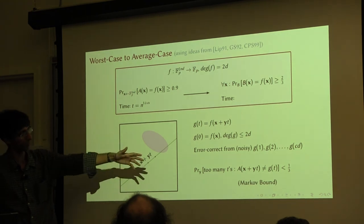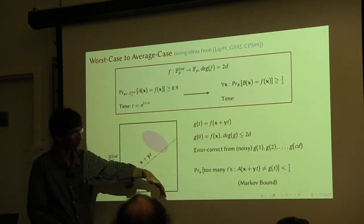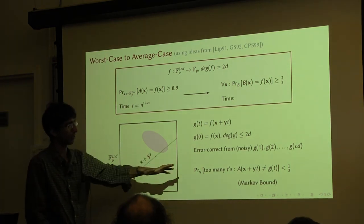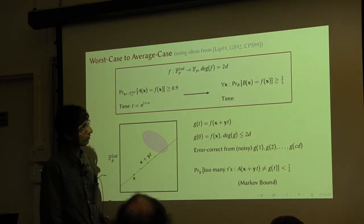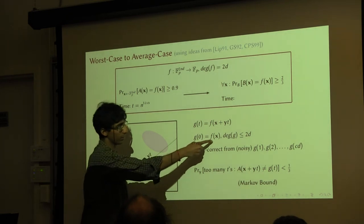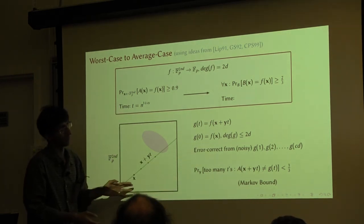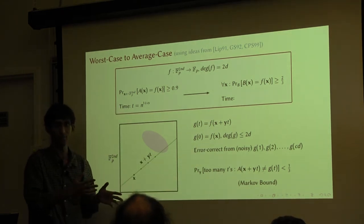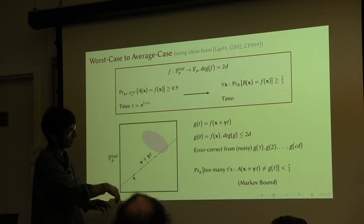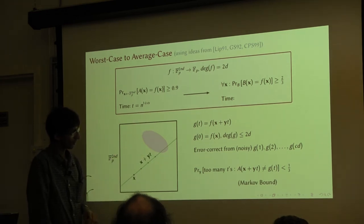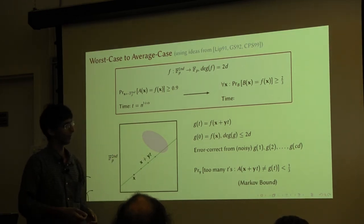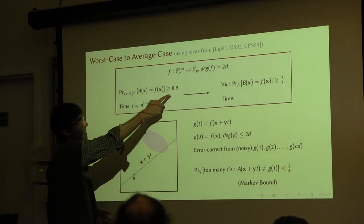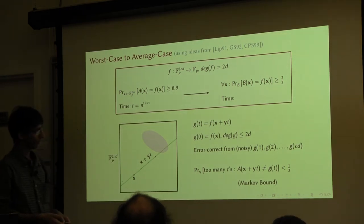The probability that there are too many points on the line where A is wrong is small. With probability at least two-thirds, you will correctly compute the value of F of x. This is true for any x. This is how B works: B takes a random line, evaluates A on this line, and error-corrects from this. So this handles the case where A is correct with probability 0.9.